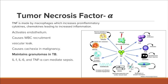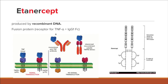Now that we've seen the effects of tumor necrosis factor alpha, we can understand how drugs such as etanercept work. Etanercept is produced by recombinant DNA. On the cell membrane we have the tumor necrosis factor receptor, which is the p55 kilodalton receptor, and it binds tumor necrosis factor alpha. There is also a second receptor, TNF receptor 2, which is p75 — a 75 kilodalton protein.